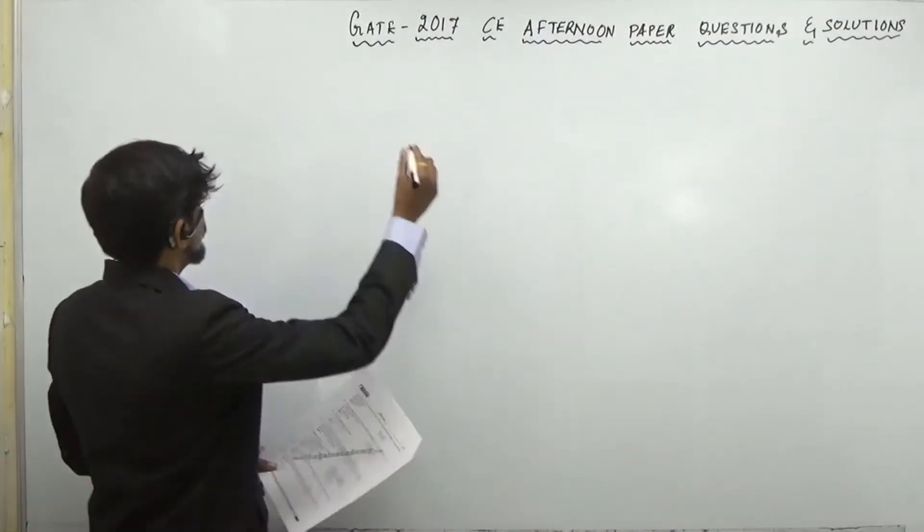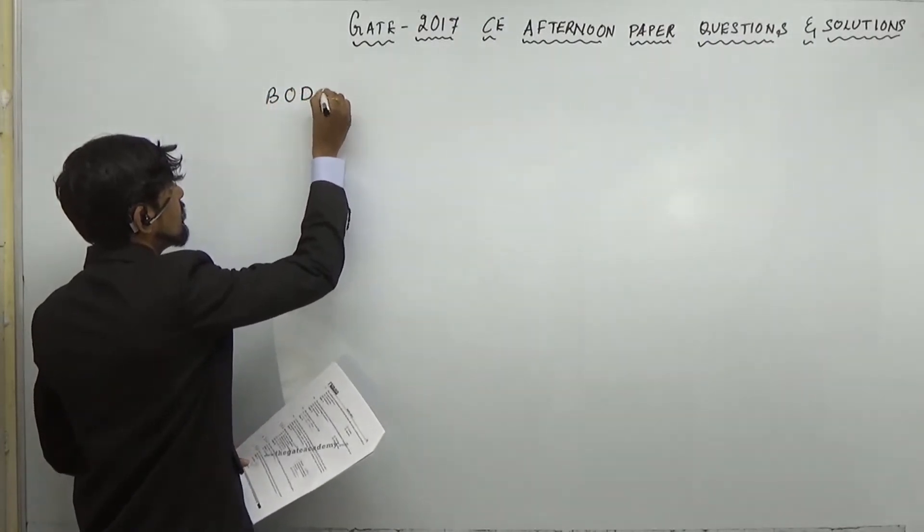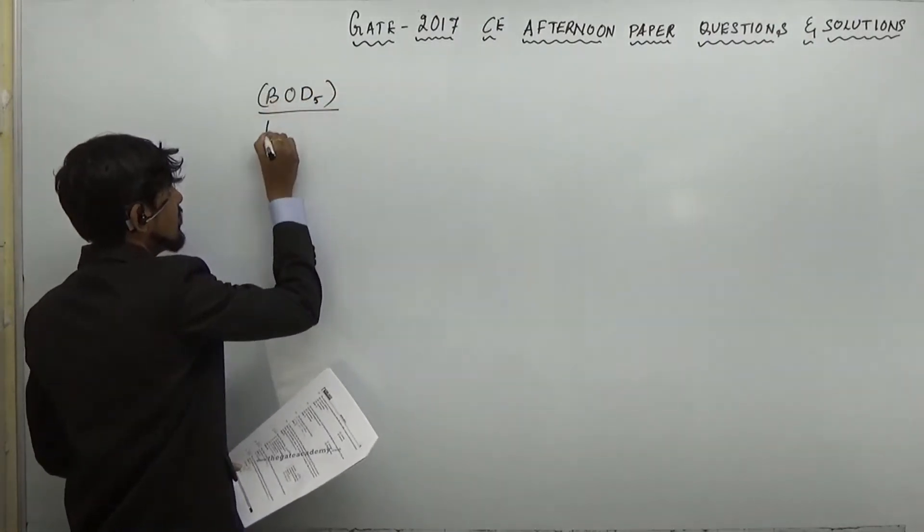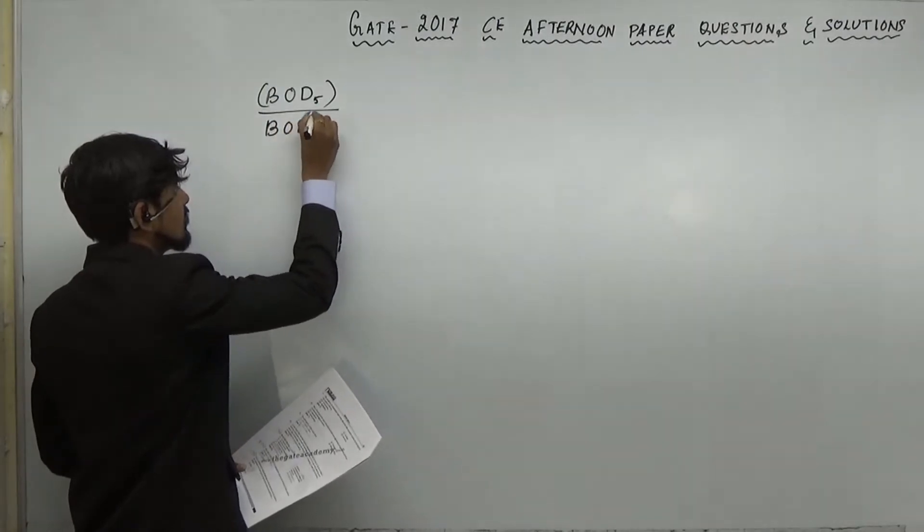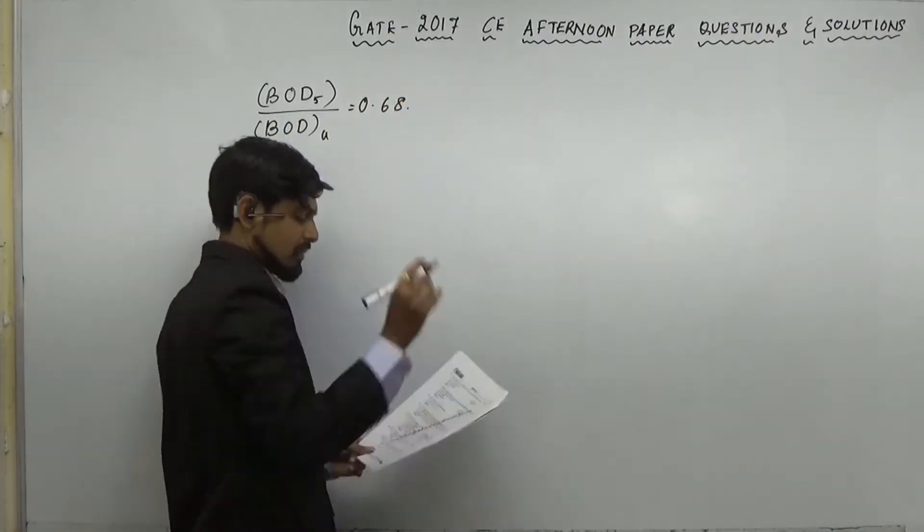So, BOD5 divided by ultimate BOD is equal to 0.68. This is given.